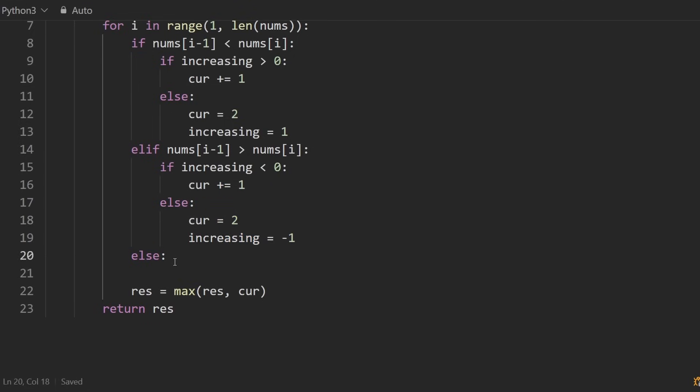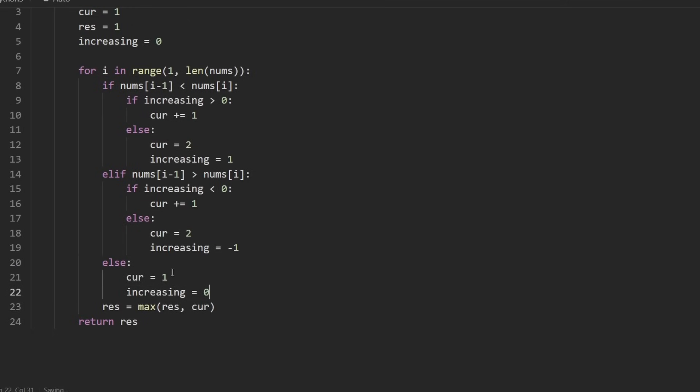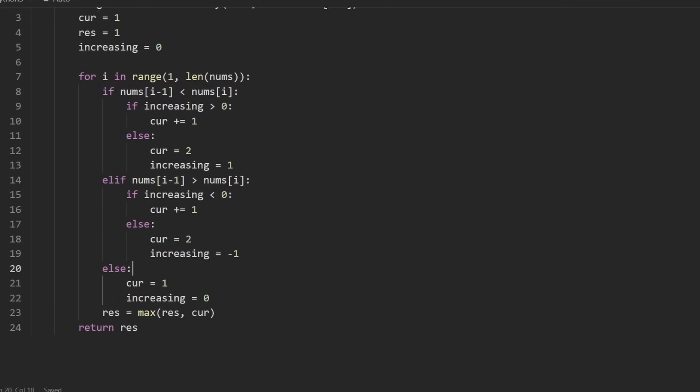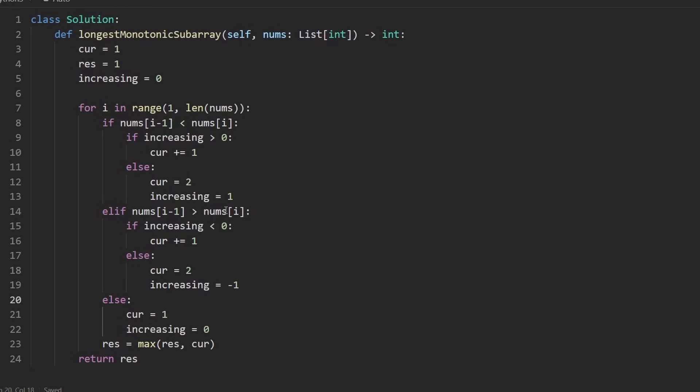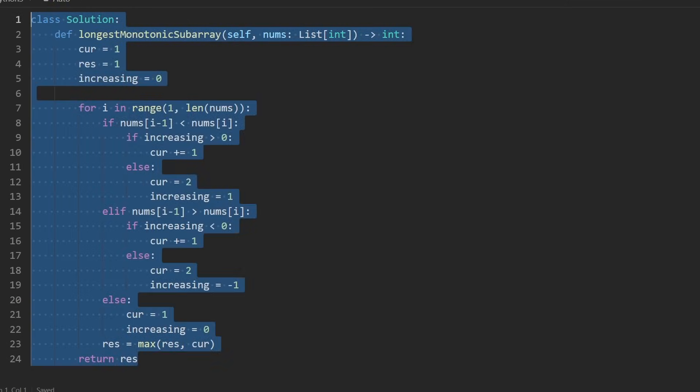And the last case, else, this is when they're equal. That's when we have to set current to be one. And we could reset increasing back to zero. I know that there are ways to shorten this code. But I'll just leave that as an exercise for you. I mean, it is an easy problem. So you got to challenge yourself in some ways.